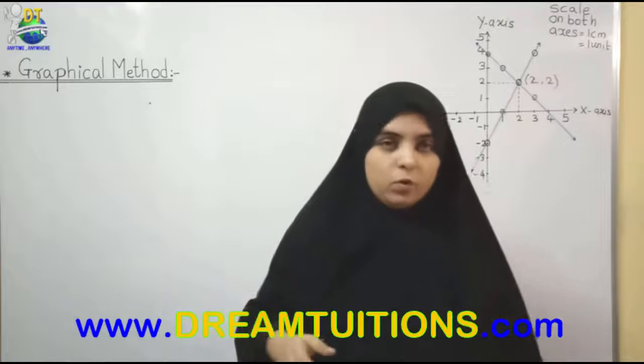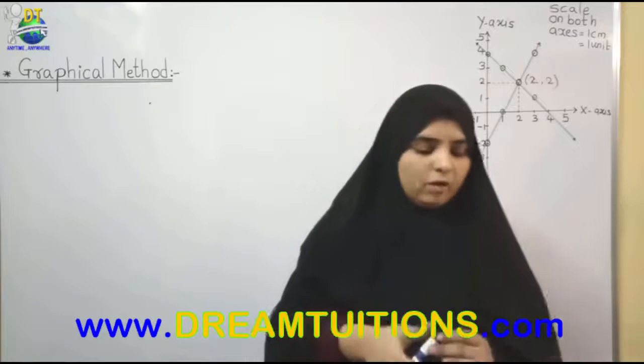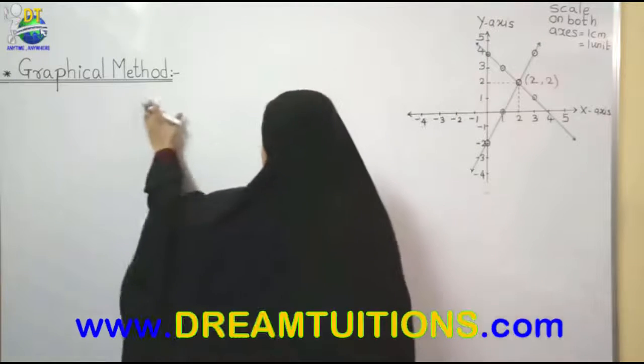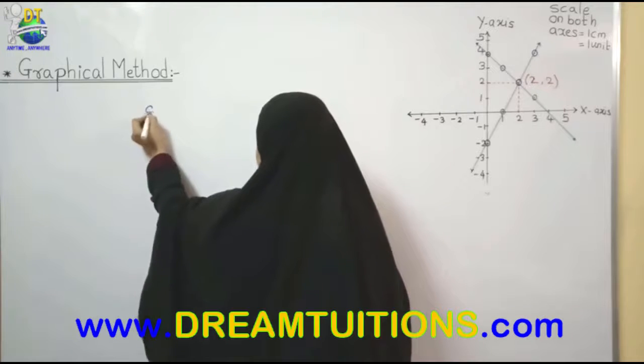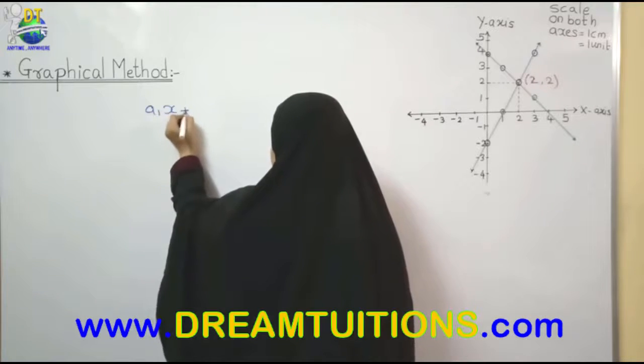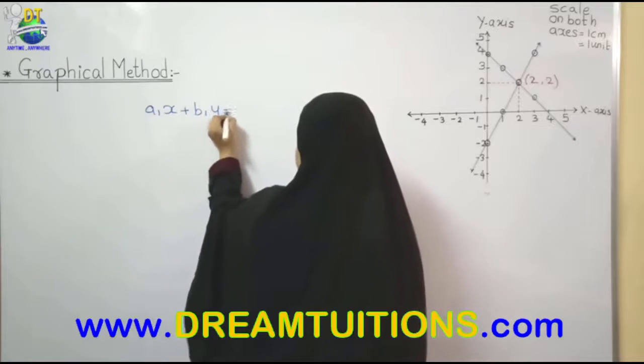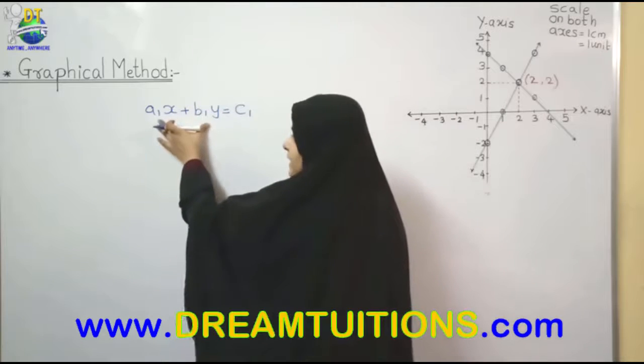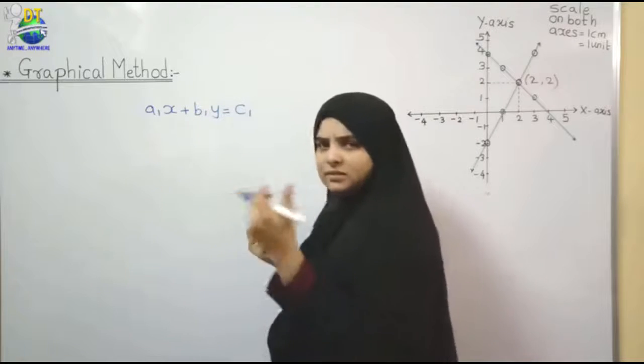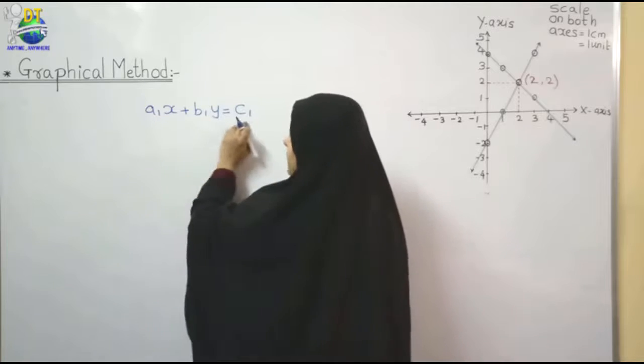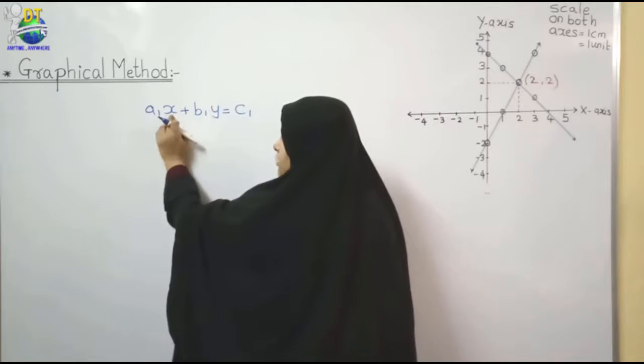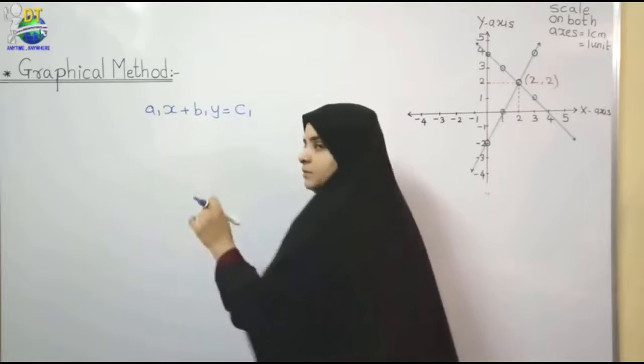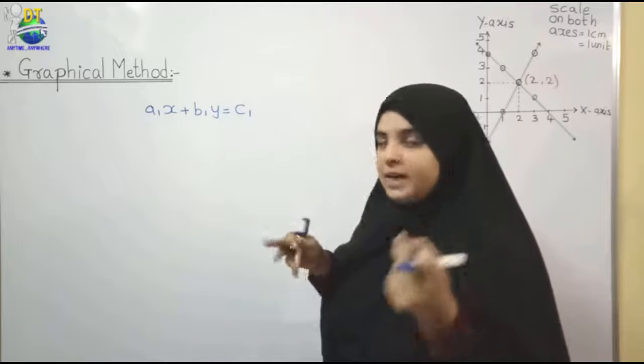See student, as we know, what are the standard form of linear equation in two variables? Suppose first equation I am going to say is a1x plus b1y is equal to c1. These are the variable containing terms. a1, b1, c1 are numbers, any real number. a1 is actually coefficient of x, b1 is coefficient of y. These two are variable terms, this is x or y, and only number constant.